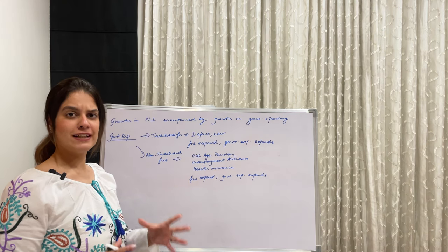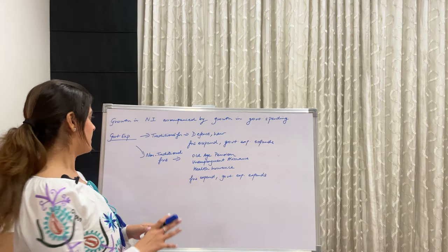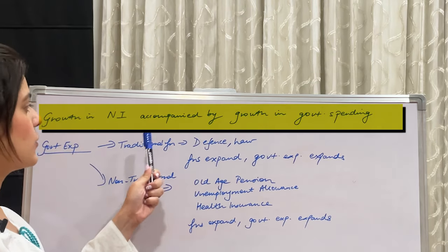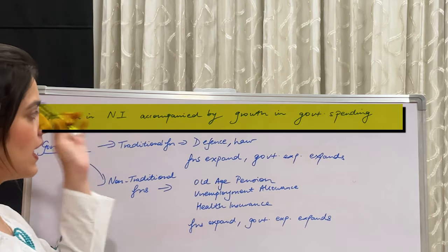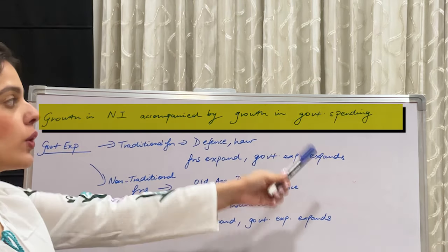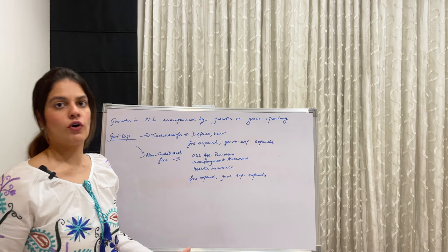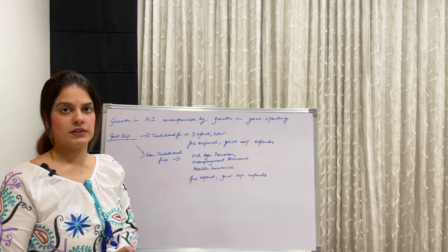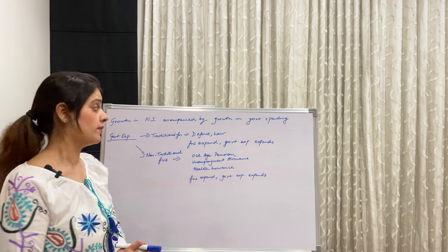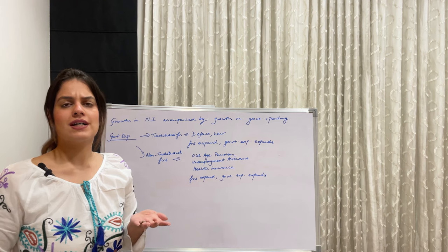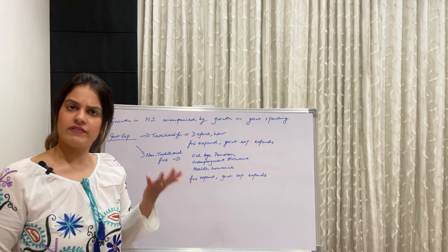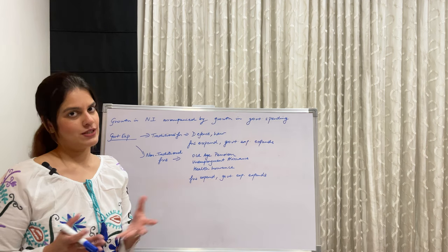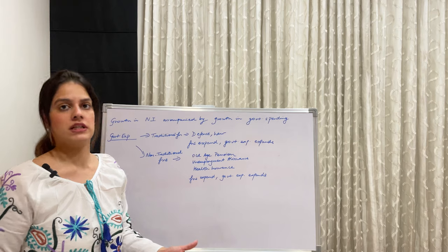By now the key statement should be clear: growth in national income is accompanied by growth in government spending. Now let's look at government expenditures — we know the government has to spend on so many things.